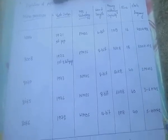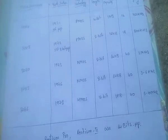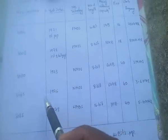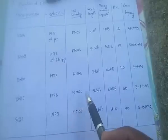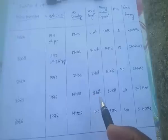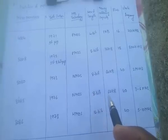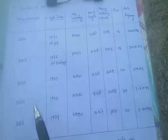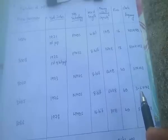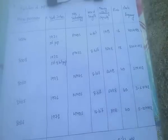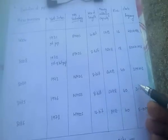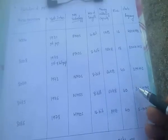The 8085 was developed in 1976. It uses NMOS technology, has an 8-bit word length, memory addressing capacity of 64 kilobytes, 40 pins, and a clock frequency of approximately 3 MHz.